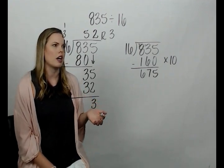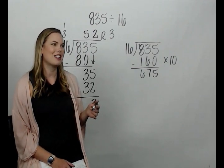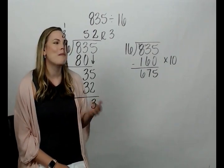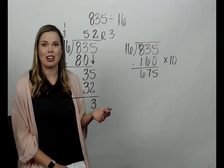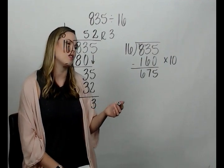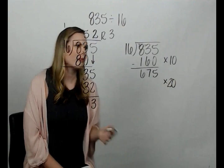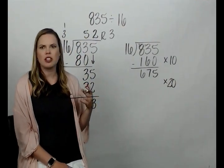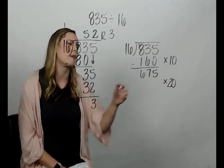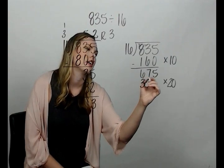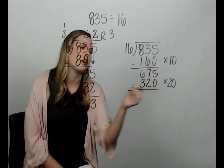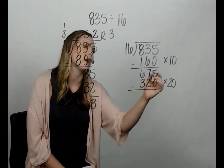We can do another 10 times or we can say, well, that didn't get us very far. So maybe let's try 20. Okay. Let's see if 16 will go into 675 20 times. And I know 16 times two, it's 32. That's not too bad to worry about. I'm just going to put a zero at the end. And I know that that's going to be less than 675. So it's not going to be a wasted attempt. I'm going to get somewhere.